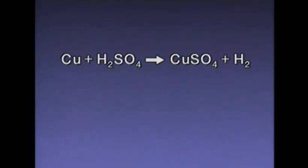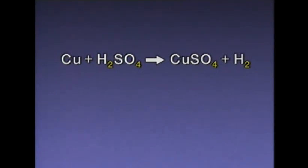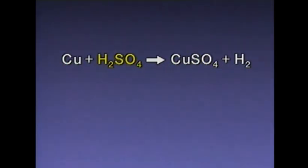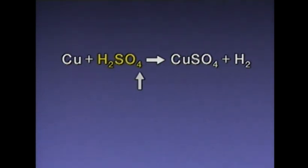For instance, the symbol for copper is Cu. The numbers to the right of some of the element symbols in the equation indicate how many atoms of that element are present. The absence of a number means that there is only one atom. In one sulfuric acid molecule, there are two hydrogen atoms, one sulfur atom, and four oxygen atoms.